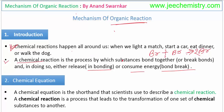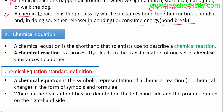After understanding chemical reactions, we learn about chemical equations. A chemical equation is a shorthand notation that scientists use to describe chemical reactions. Any chemical reaction that occurs can be described by scientists using this certain notation called the chemical equation.